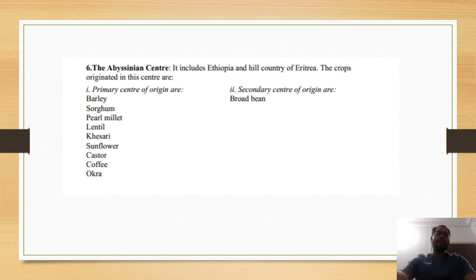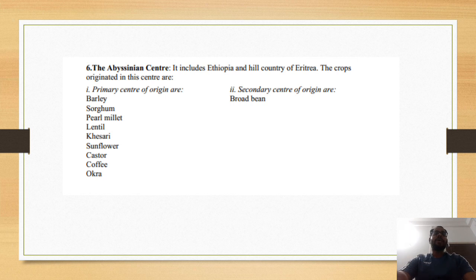The sixth is the Abyssinian region, which is the Ethiopia region. Ethiopia is the part of the Abyssinian region. The crops found in this region include various cereals and pulses.